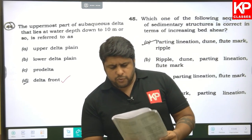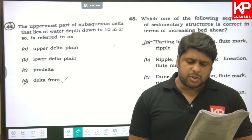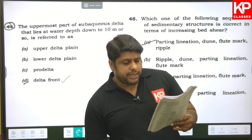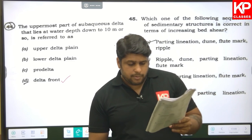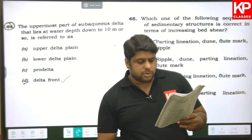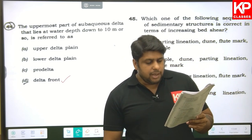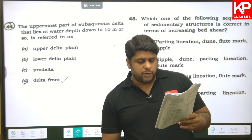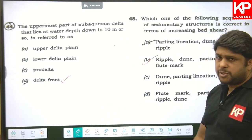Question forty-five: which sequence of sedimentary structures is correct in terms of increasing bed shear stress? The first option starting with parting lineations then dune is wrong — dunes form first. The correct sequence is ripple → dune → parting lineation → fluid marks. So B is the right answer.